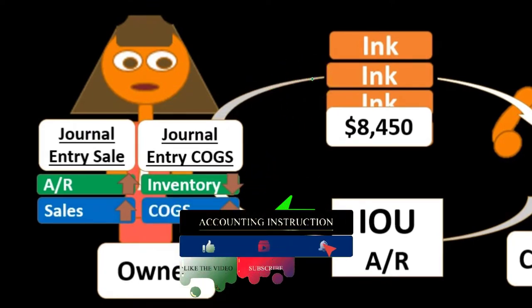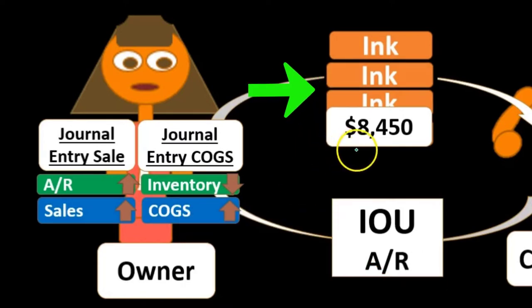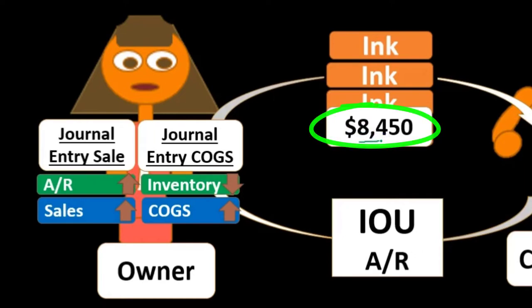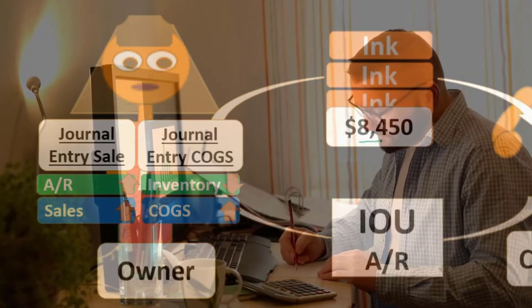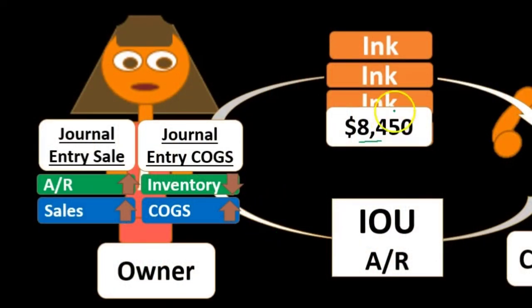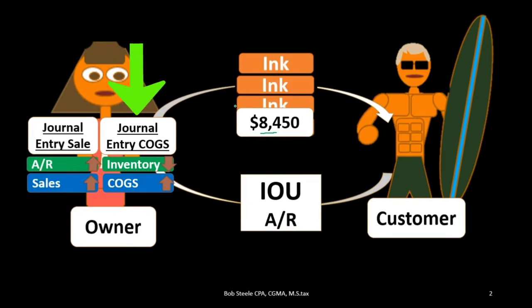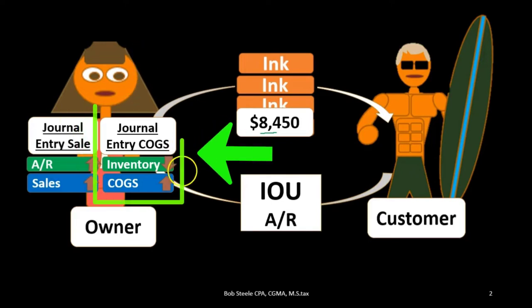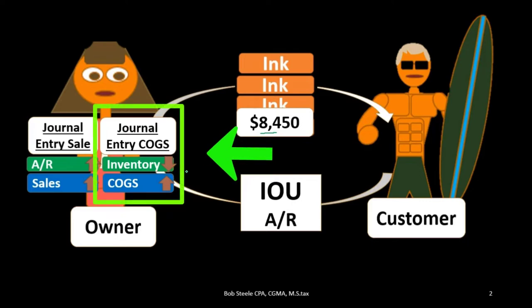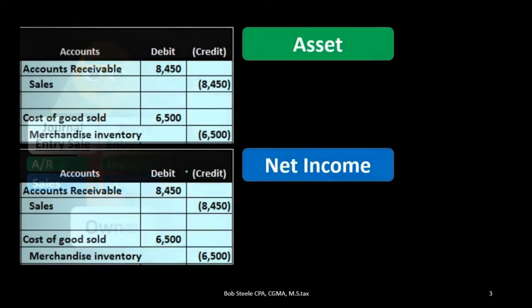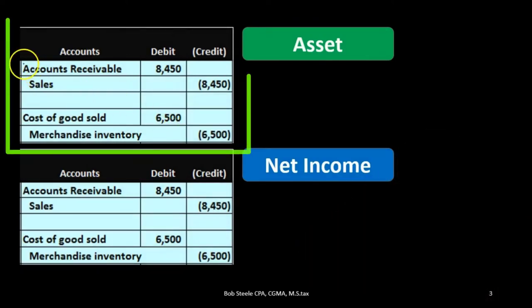The inventory is not going to go down by the sales price — that's kind of the point. That's the reason we may use a periodic system as opposed to a perpetual one: oftentimes the person making the sale may not know the cost. Unless we have an electronic system that knows the costs, or we only sell one particular thing, that's why we may use a system that records this second component only at the end of the period.